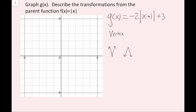To find the vertex, to find my x component, it's whenever this expression, x minus 1, is equal to 0. So I'll set x minus 1 equal to 0. If you add 1 on both sides, you get x equals 1. So the x value of my vertex is 1.